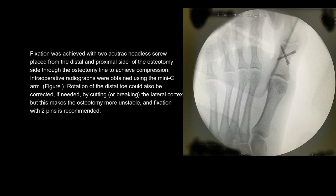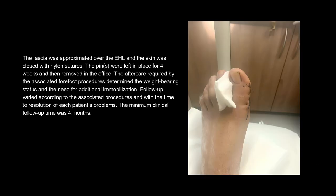Fixation was achieved with two acutrac headless screws placed from the distal and proximal side of the osteotomy through the osteotomy line to achieve compression. Intraoperative radiographs were obtained using the mini-C arm. Rotation of the distal toe could also be corrected by cutting or breaking the lateral cortex, but this makes the osteotomy more unstable and fixation with two pins is recommended. The fascia was approximated over the EHL and the skin was closed with nylon sutures. Pins were left in place for four weeks and then removed in the office. The aftercare required by associated forefoot procedures determined the weight-bearing status and need for additional immobilization. Minimum clinical follow-up time was four months.